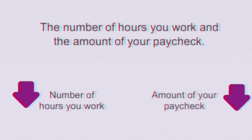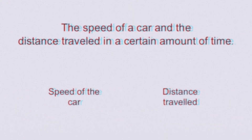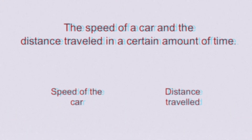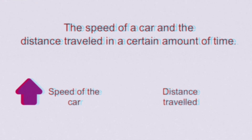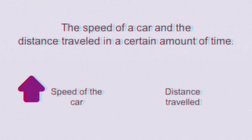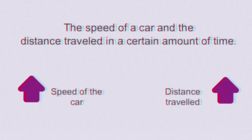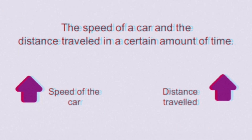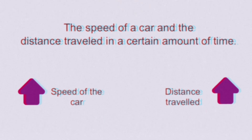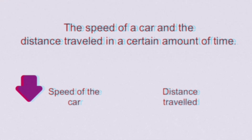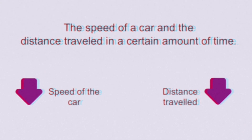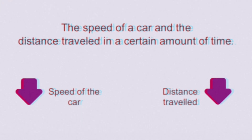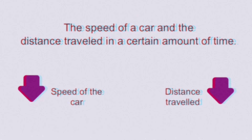Let's take another example. The speed of a car and the distance traveled in a certain amount of time are directly proportional to each other, which means that if a car travels faster, it can cover more distance in a given time. On the other hand, if a car travels at a slower speed, then it can cover less distance. This tells us that the speed of a car is directly proportional to the distance it traveled in a certain amount of time.